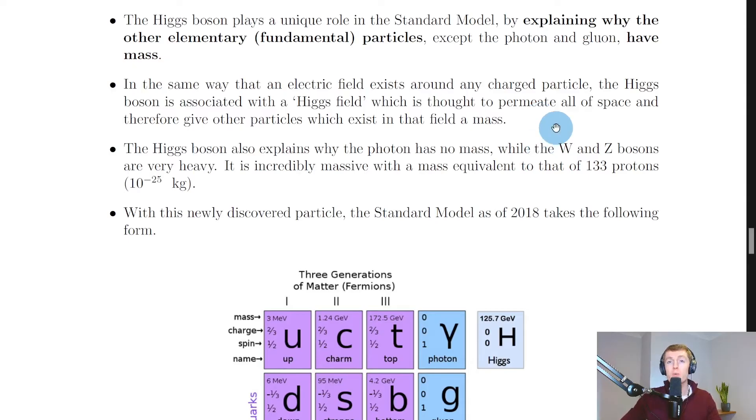And remember we looked at bosons which were force-mediating particles? The Higgs boson also explains why the photon has no mass while the W and Z bosons are very heavy. It is incredibly massive with a mass equivalent to that of 133 protons, on the order of 10 to the minus 25 kilograms.